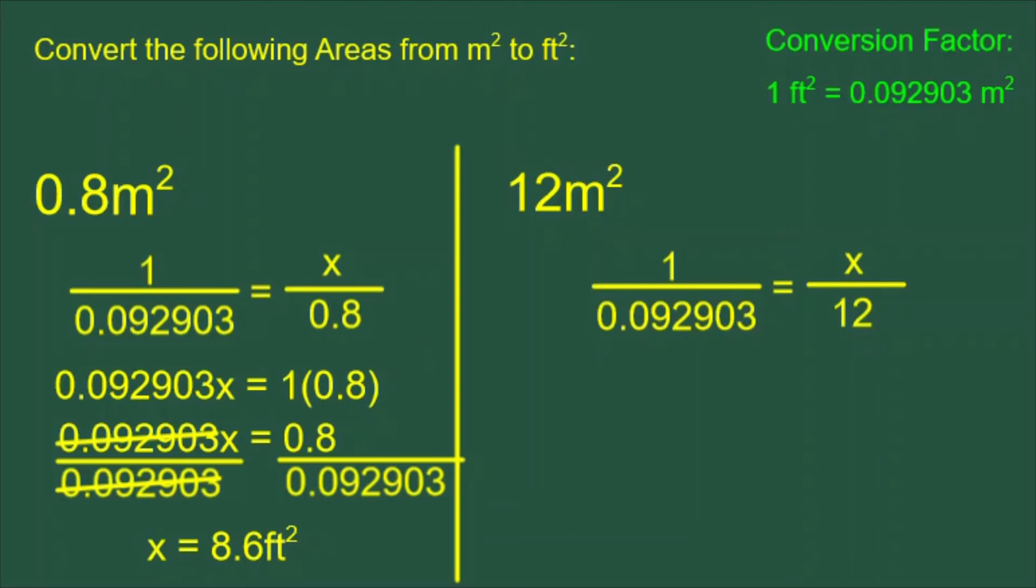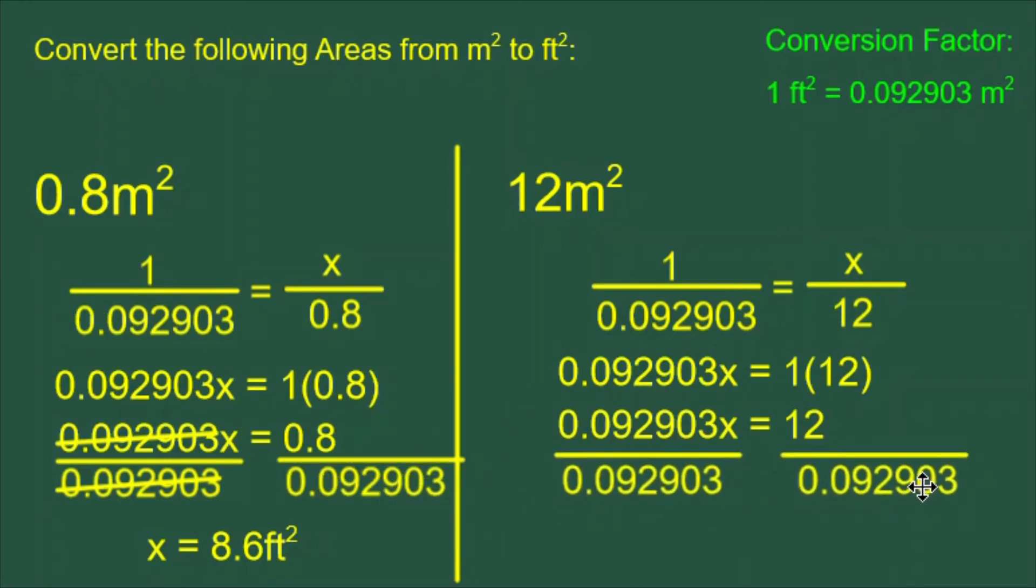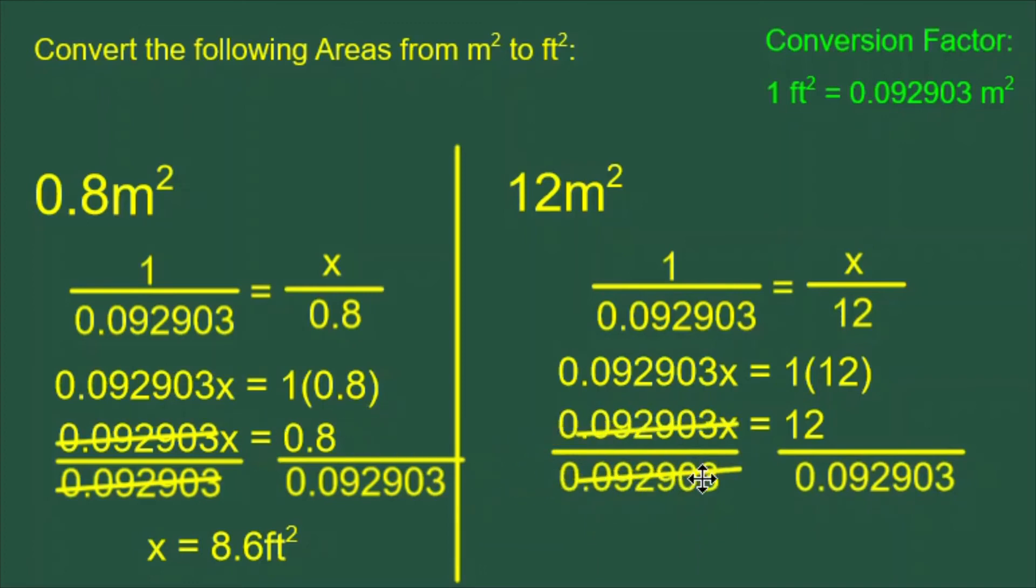Cross multiplying, we get 0.092903x equals 1 times 12, which means 0.092903x equals 12. We divide both sides by 0.092903. These cancel, and x is isolated and is equal to 129.2 feet squared.